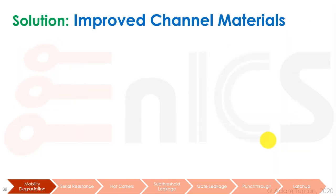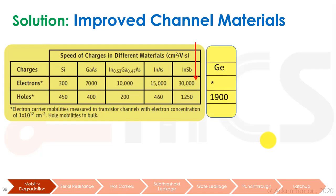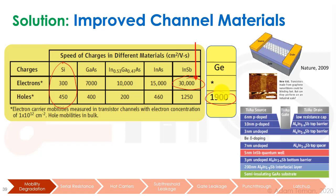Another solution to the mobility problem is improving the channel materials. If we look at a table comparing silicon, gallium arsenide, indium arsenide, and different materials, we see that the mobility of both electrons and holes is different across materials. Instead of just using silicon, why not change the channel material? For example, we get 30,000 versus 300 in silicon for electron mobility. For PMOSs, maybe we should use germanium, which has hole mobility of 1900. There are many papers and studies showing how to engineer the channel with different materials.